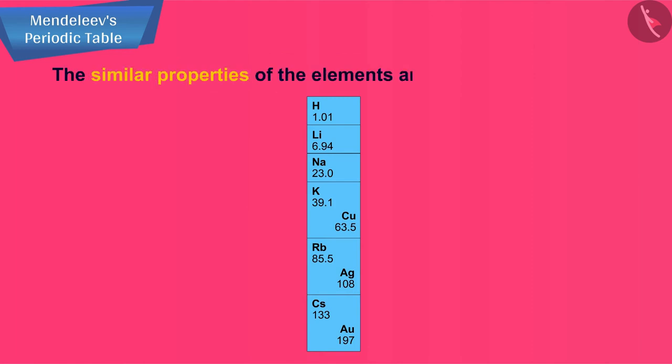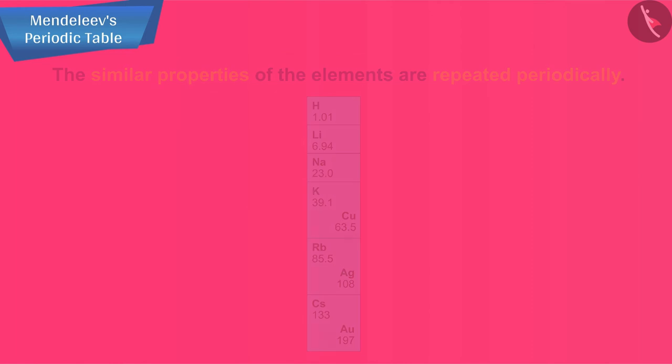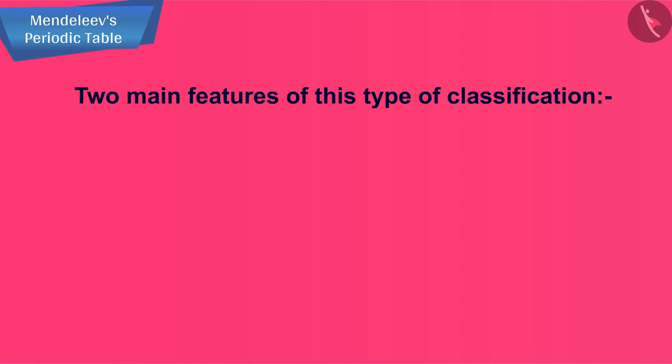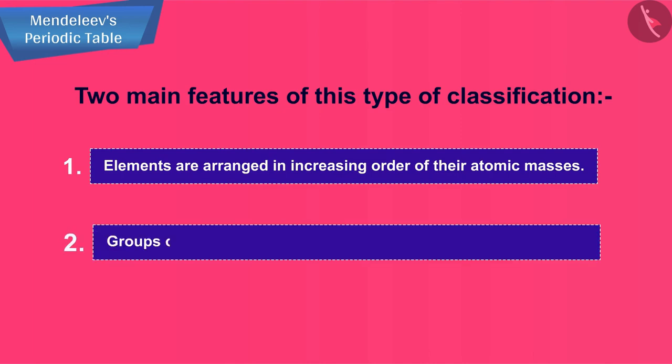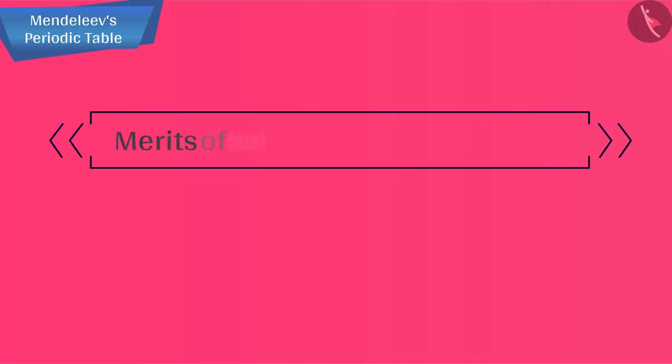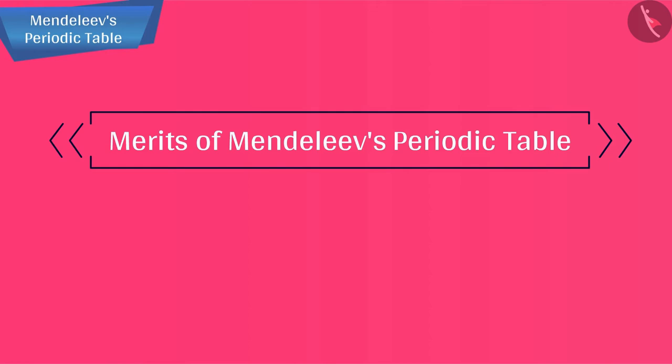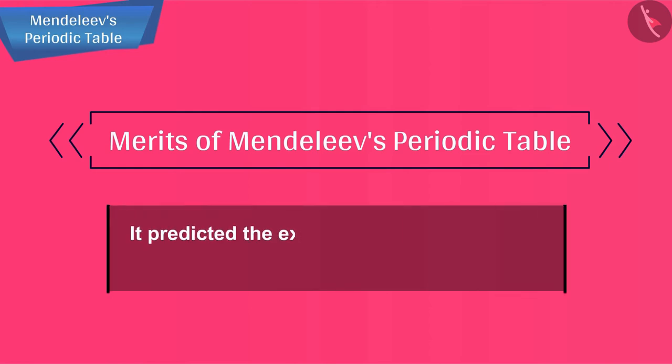The similar properties of the elements are repeated periodically. We will now describe two main features of this type of classification. One: elements are arranged in increasing order of their atomic masses. Two: groups of elements have similar properties.